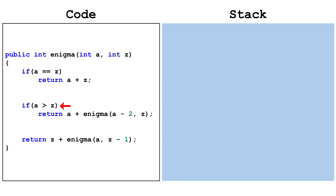If a is greater than z, we get a recursive case and return a plus whatever is returned by a call to enigma that passes a minus 2 and z. Finally, if it makes it down to the last line, it must be that a is less than z. We have an alternate recursive call that returns z plus whatever is returned by a call that passes a and z minus 1.